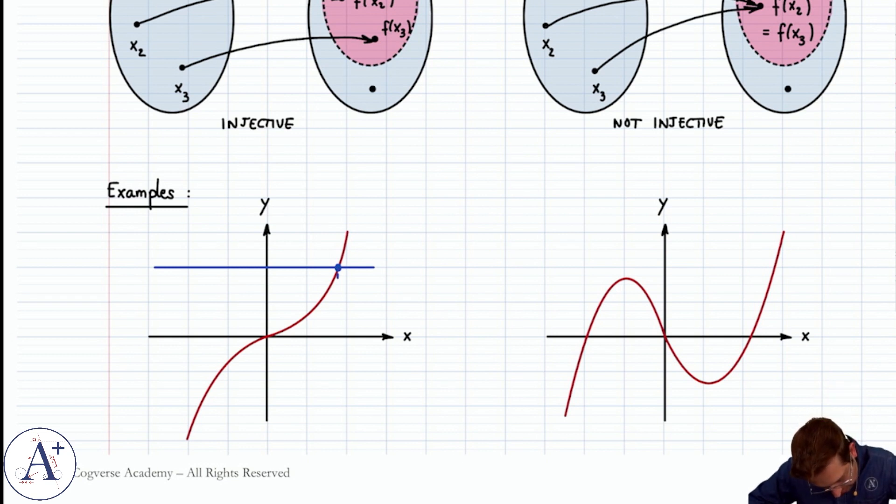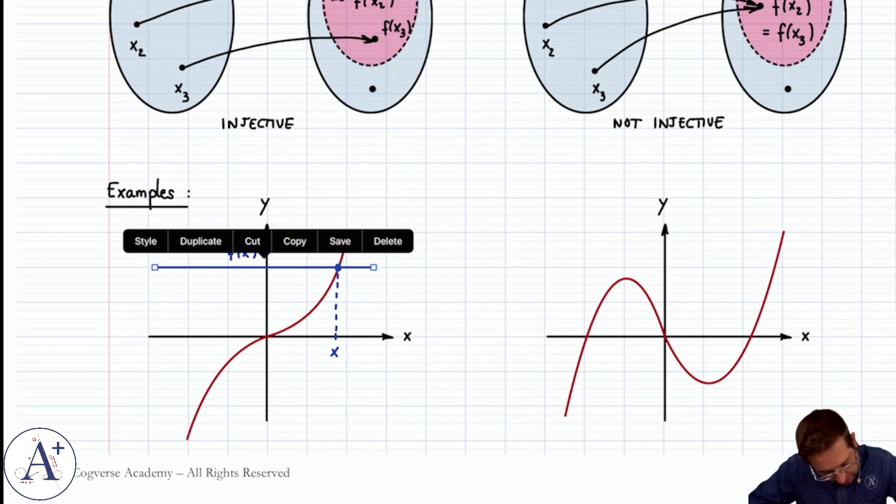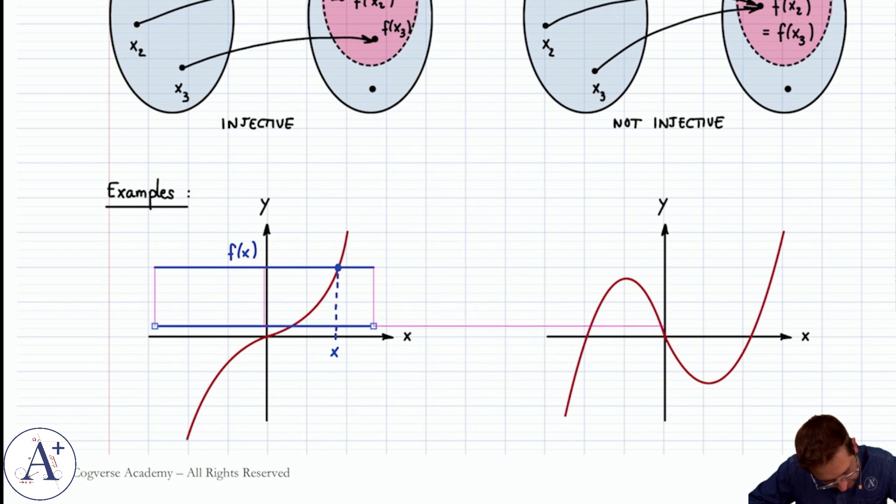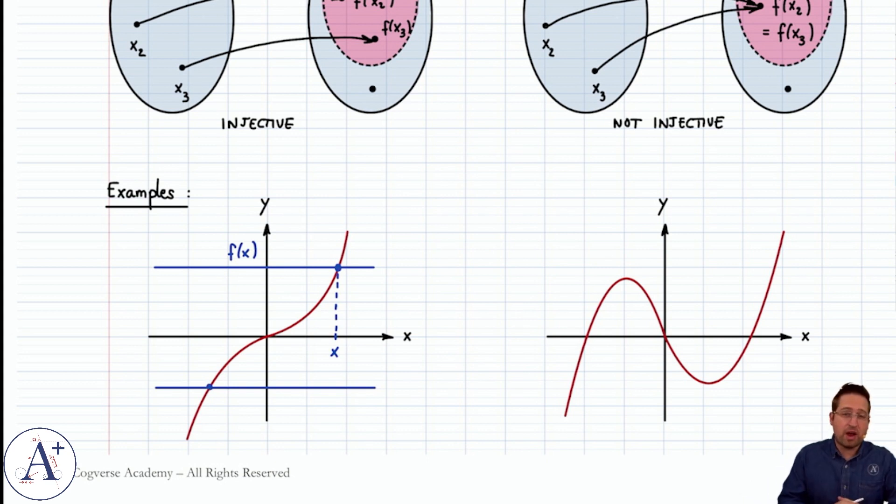Because if it does intersect, you have a pre-image, but you don't want it to intersect more than once, because that would mean you'd have more than one pre-image for a given image. You can see that if you slide this horizontal line up and down, you only ever intersect this graph once. So this is the graph of an injective function.